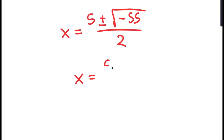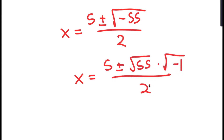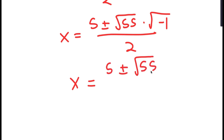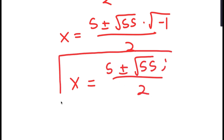This is equal to 5 plus or minus the square root of 55 times the square root of negative 1, all over 2. The square root of negative 1 is equal to the imaginary number i. So I get 5 plus or minus the square root of 55 times i, over 2. So these are two more solutions to this equation.